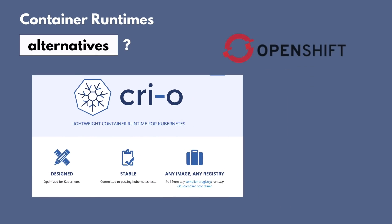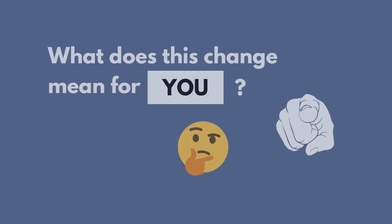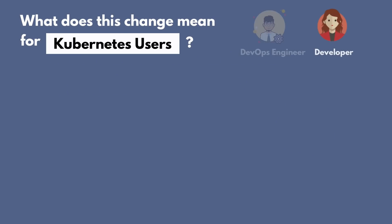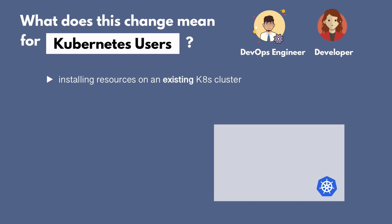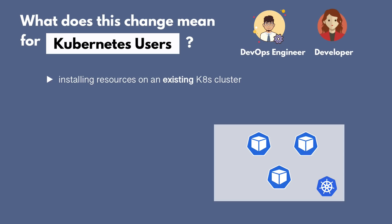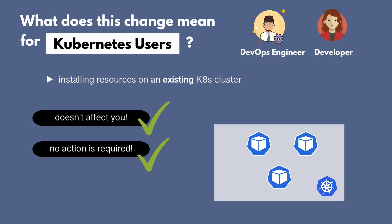Another alternative container runtime is CRI-O, which is used by OpenShift. So what does this change mean for you as a Kubernetes user or administrator? For Kubernetes users — mostly developers or DevOps engineers who are installing resources on an already existing and configured Kubernetes cluster — the change doesn't actually affect any of your workflows, because that layer is completely abstracted away. You're not interacting with containers directly, so whatever container runtime is running underneath, even if it changes, you probably won't even notice.